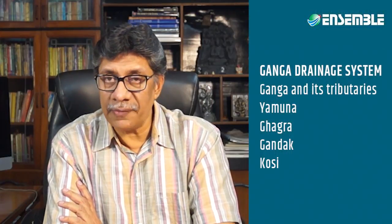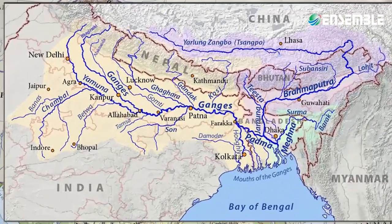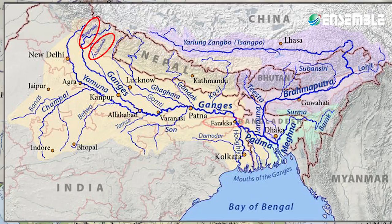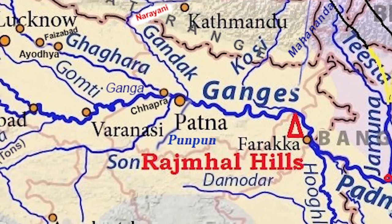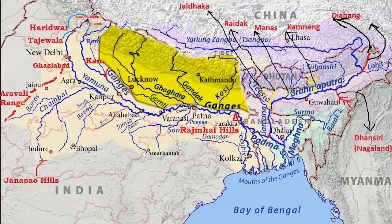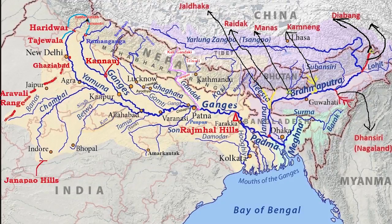The Ganga drainage system includes the Ganga and its tributaries like the Yamuna, Ghaghra, Gandak, and Kosi. The name Ganges is used for the river between the confluence of the Bhagirathi and Alaknanda rivers in the Himalayas and the India-Bangladesh border near Farakka. The Ganges is known for two major confluences: one where it meets the Yamuna at Prayag (Allahabad), and the second at Patna, being the confluence of four rivers — Ganga, Son, Gandak, and Punpun. The Gandak river is a left-bank tributary of the Ganga that drains the central part of Nepal, also known as Kali Gandaki and Narayani after confluence with the Trishuli in Nepal.